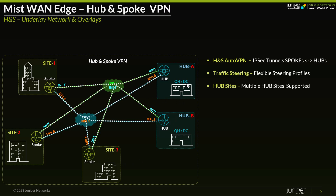In the MIST solution, we can have multiple hubs — it's not limited to two hubs. In this example I'm just showing a high-level topology of hub A and hub B. But you may have multiple hubs. For example, if you have two hubs in your headquarters and maybe an additional hub deployed in a cloud provider, that is supported as well.